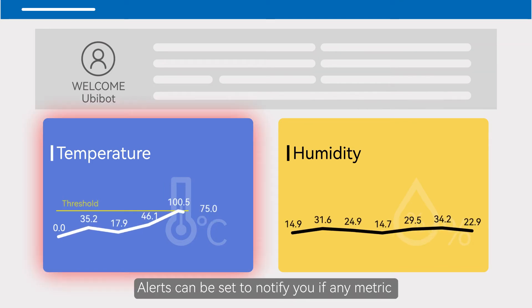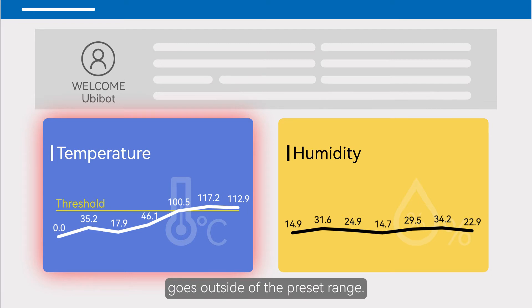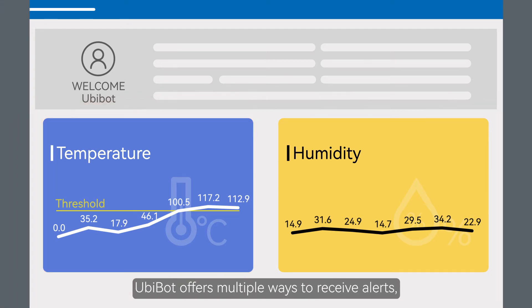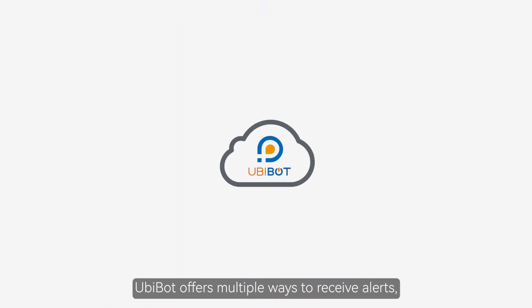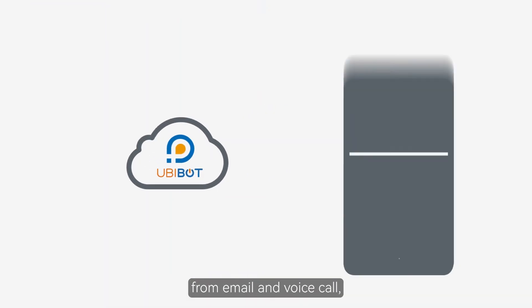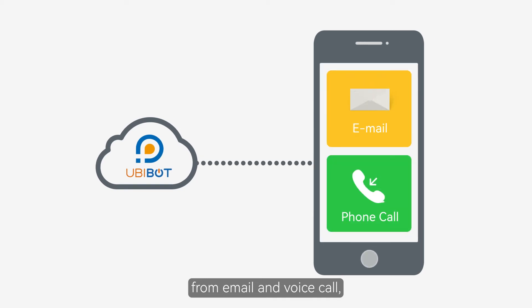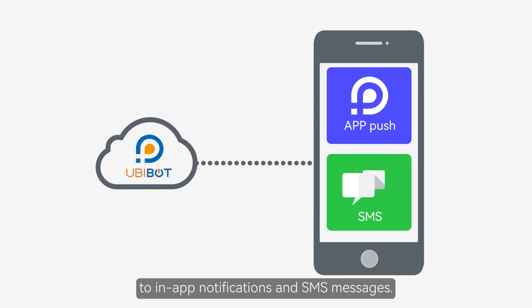Alerts can be set to notify you if any metric goes outside of the preset range. UbiBot offers multiple ways to receive alerts, from email and voice calls to in-app notifications and SMS messages.